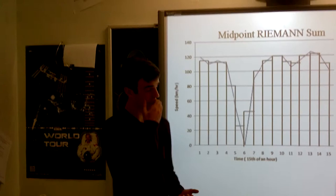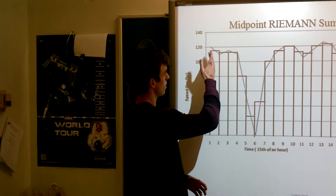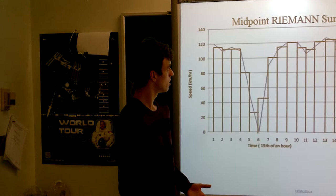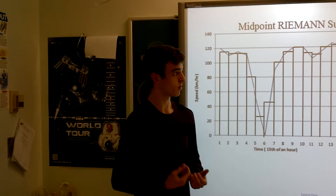For the Midpoint Riemann sum, you make the rectangle in between each point that you plotted. Right here, I was going 115 kilometers an hour — that's the average of those two adjacent points — and that would be over four minutes. So the distance traveled in that rectangle is 7.66 kilometers.